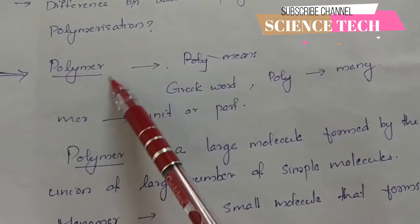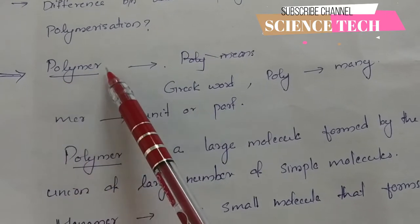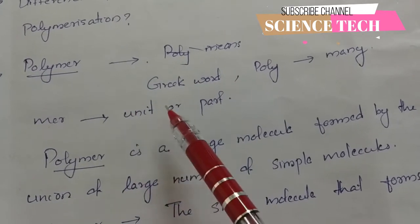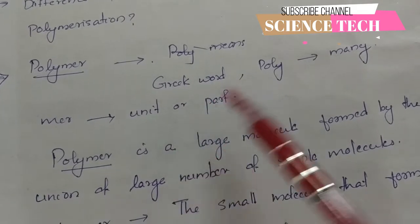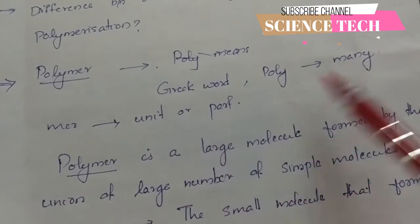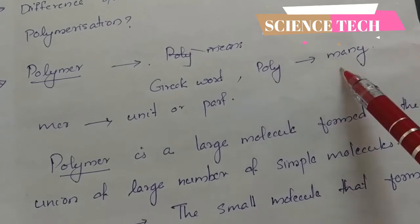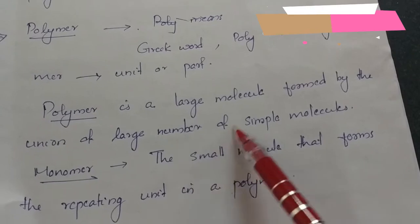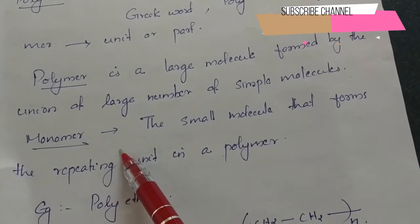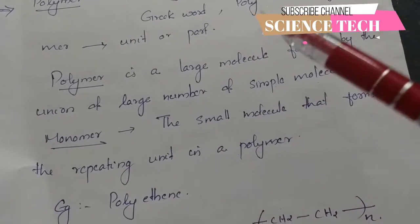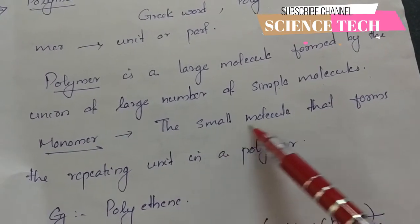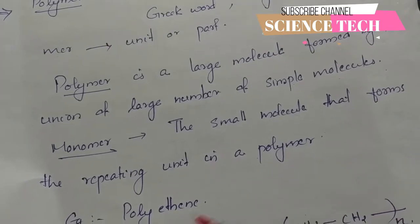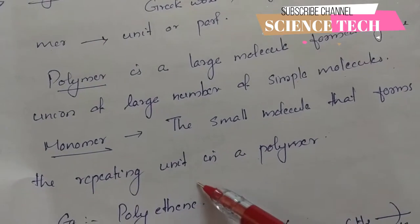Polymers is a Greek word which is a combination of two terms: poly and mer. Poly means many, and mer means unit or part. A polymer is a large molecule formed by the combination of a large number of simple molecules called monomers. The monomer is the small molecule that forms the repeating unit. For example, in polythene, the monomer is ethene.